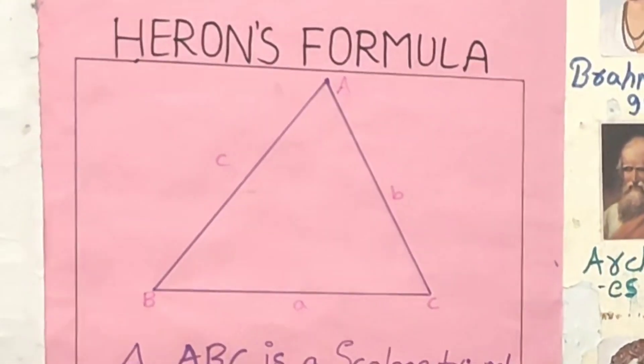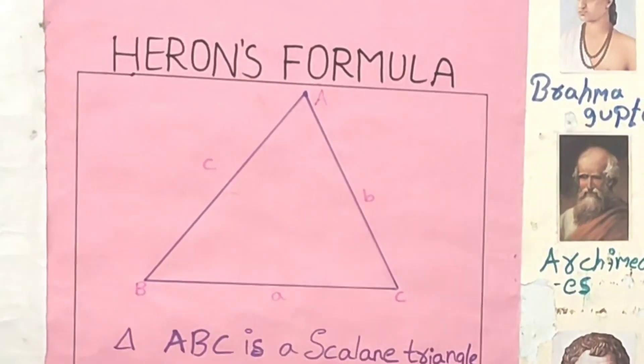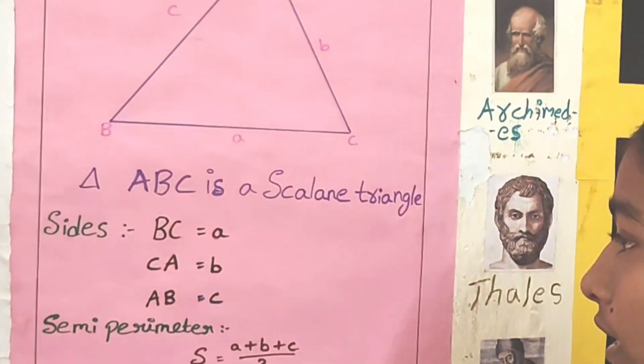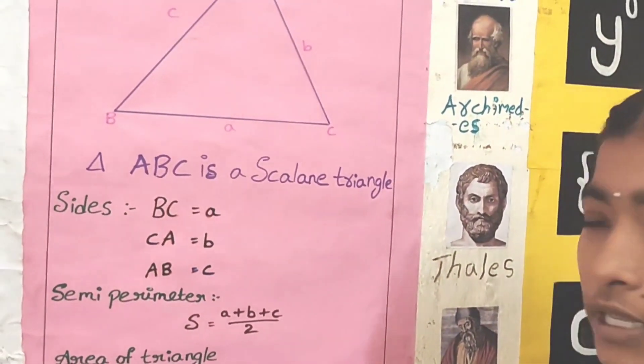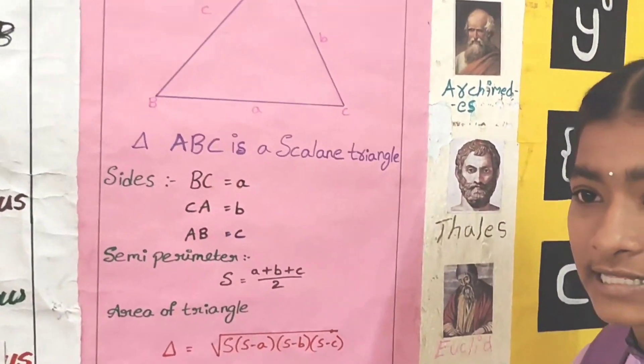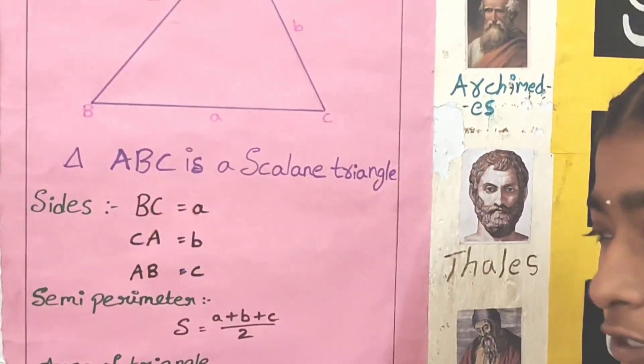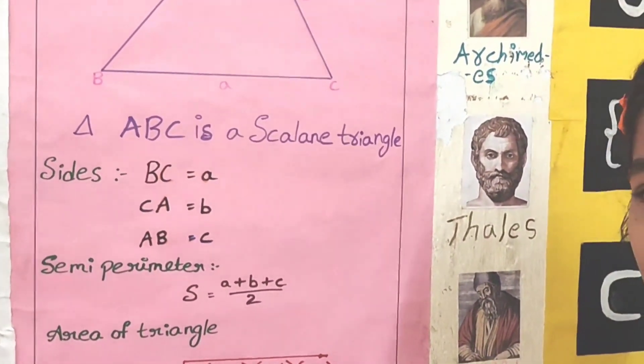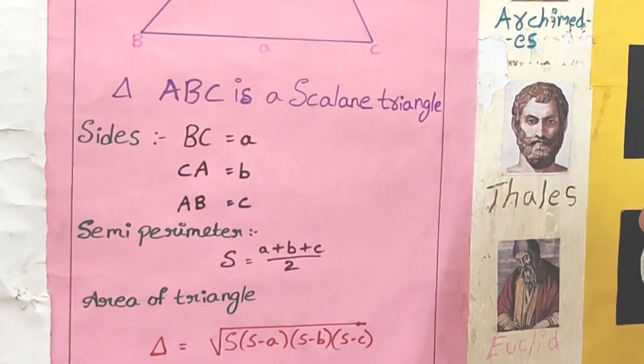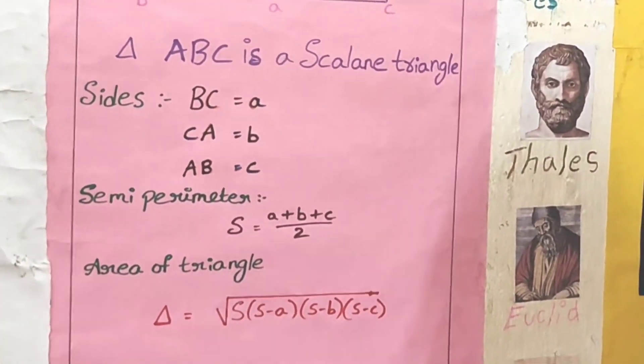This is Heron's formula. Triangle ABC is a scalene triangle. Side BC is equal to small a. CA is equal to small b. AB is equal to small c. Semi perimeter S is equal to A plus B plus C by 2. Area of triangle delta is equal to root S into S minus A into S minus B into S minus C.